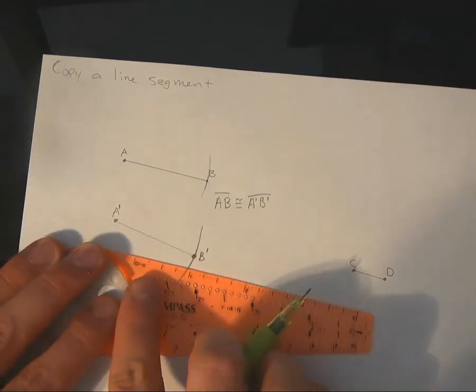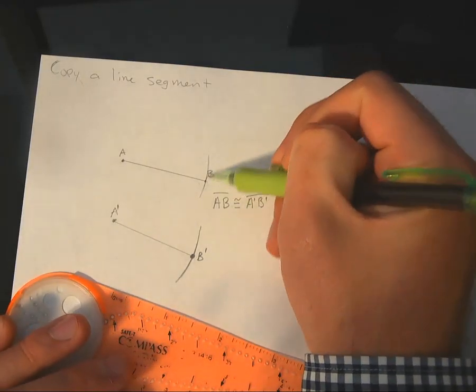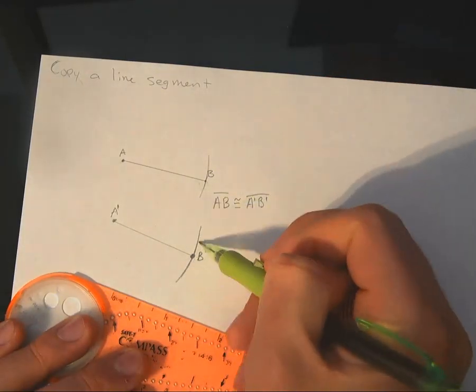You'll notice I didn't use the ruler. We're not going to do that. We're not going to cheat. When we do this, we want to make sure that we're showing our compass arcs right here. Don't try to fake those.